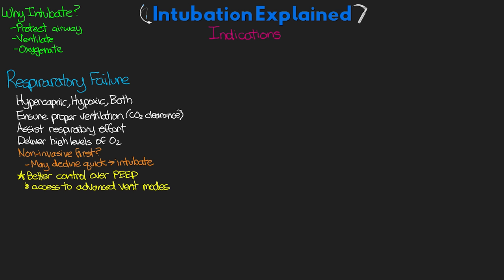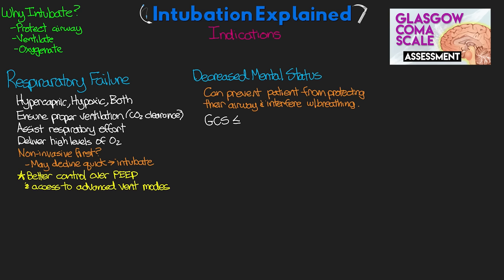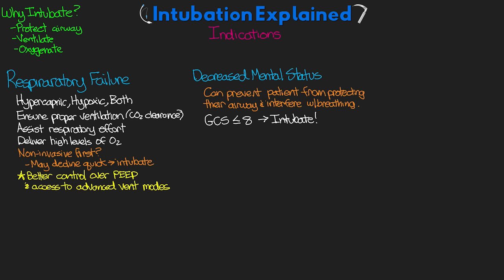Another indication is going to be our decreased mental status, or our altered mental status. Here, a decreased mental status can really prevent our patients from protecting their own airway and interfere with their proper breathing. Typically, if their GCS is less than or equal to 8, then we intubate. Kind of a catchy phrase to help us remember it. This can also apply, though, to rapidly deteriorating mental status, especially if it's combined with respiratory compromise. This is something that's common in patients with brain injury, strokes, and overdoses.